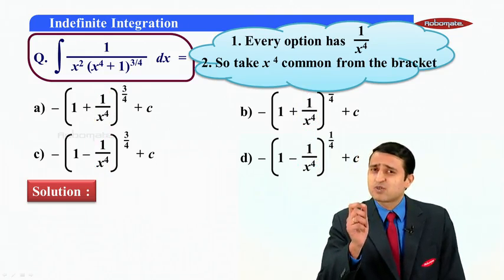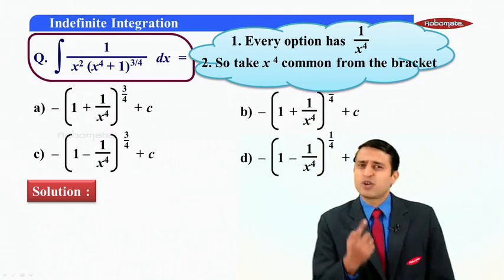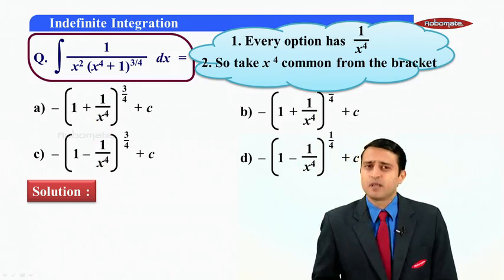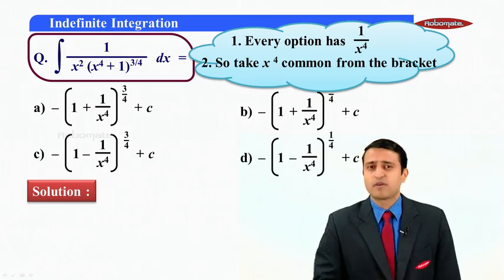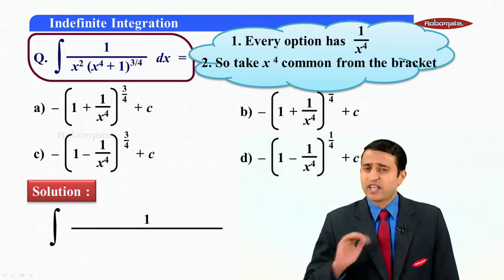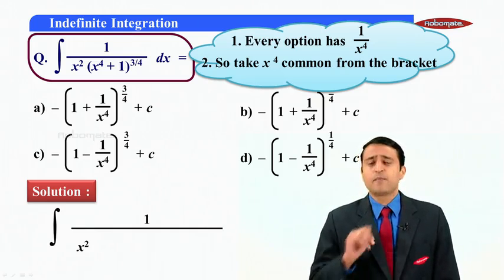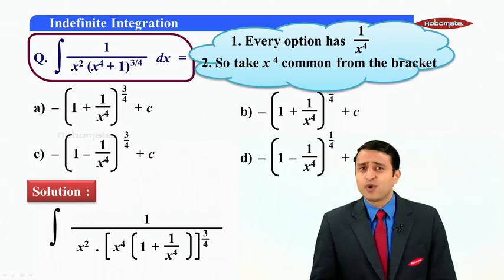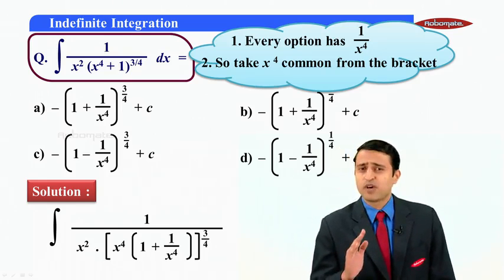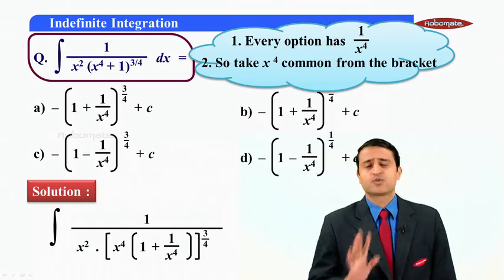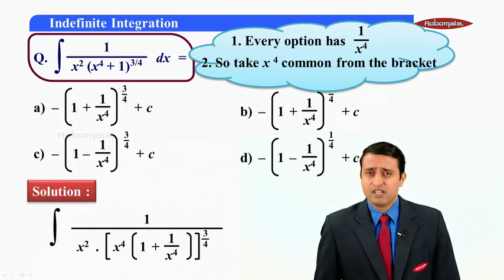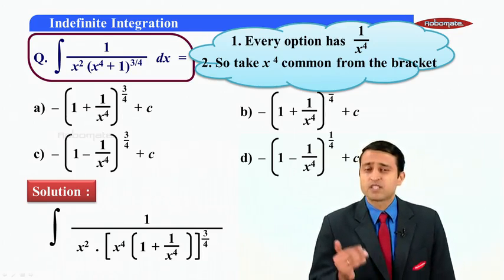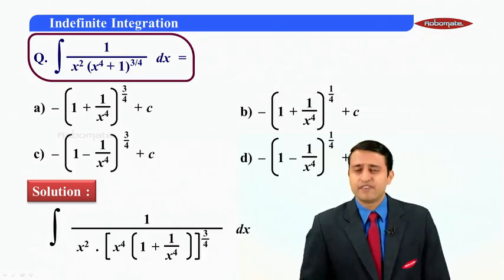If I take x raise to 4 common from the bracket there is only one term in x raise to 4 which is with plus 1 and raised to the power 3 by 4. So let us write that step. I will put a square bracket and take x raised to 4 common. So we will get x raise to 4 into bracket 1 plus 1 upon x raise to 4 the entire thing raised to 3 by 4. Now you can see we have something similar to the options with us. Let us proceed further.